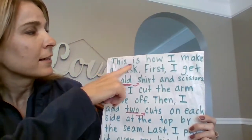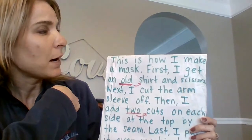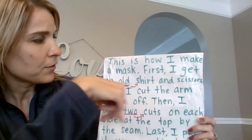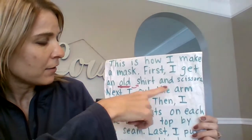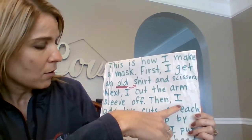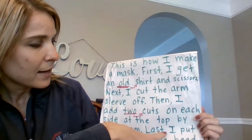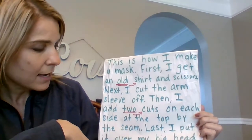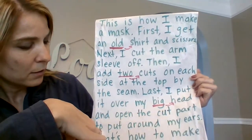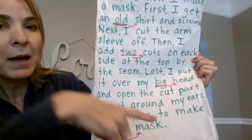Here we go. It says, 'This is how I make a mask.' So that's my topic sentence — you're going to know what you're reading about. First, I get an old shirt and scissors. Next, I cut the arm sleeve off. Then I add two cuts on each side at the top by the seam. Last, I put it over my big head and open the cut part to put around my ears. That's how to make a cool mask.